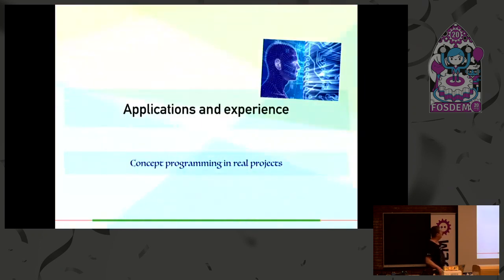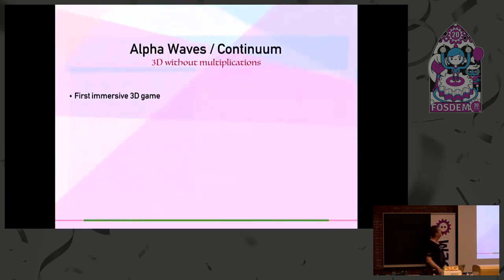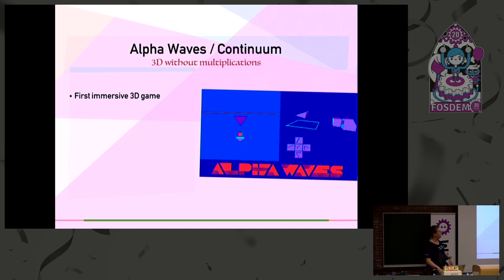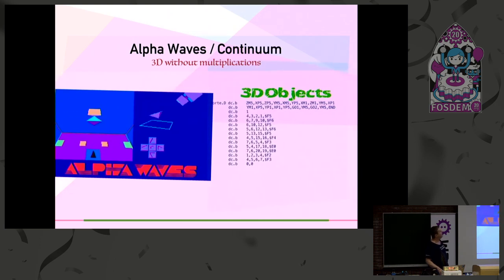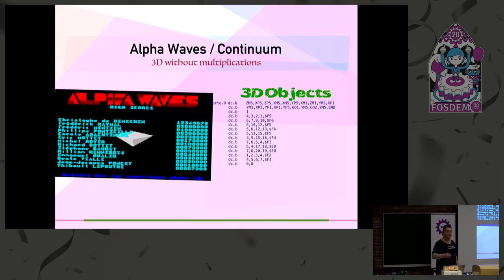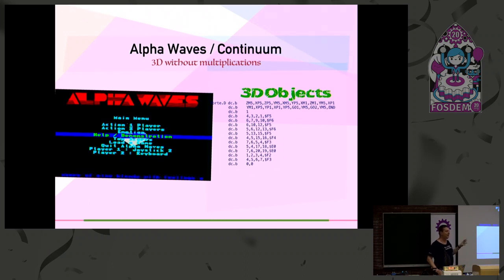I'm going to very quickly go through a few applications to show you that in real life it does actually matter. For instance, I wrote a game when I was 18 or something. That was the first 3D platform game. How did concept programming play into that? Well, that's the description of 3D objects in it. To you it's probably unreadable, but if you know, like I did because I created it, that zm5 means along the z-axis minus 5, xp5 along the x-axis plus 5 units, etc., this is actually a description I can replay in my head and understand what object I'm talking about. So it's 3D modeling with only assembly language, if you wish.